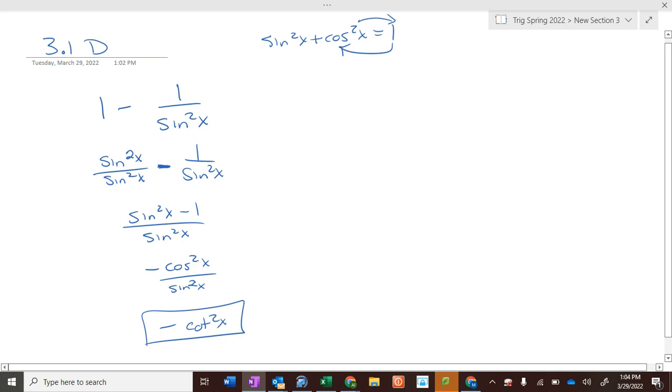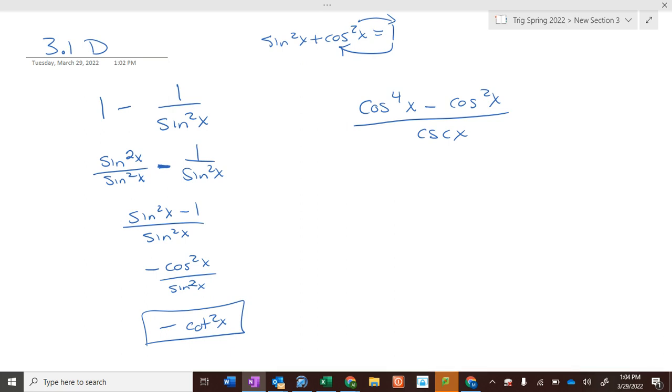Okay, so what if we have cosine to the fourth of x minus cosine squared x all over cosecant of x? How do we simplify that bad boy? Well, we can do a little factoring here. What can we factor out of the top? Cosine squared of x.